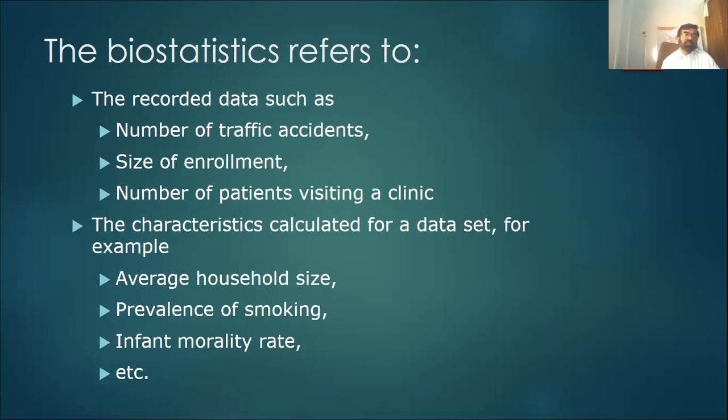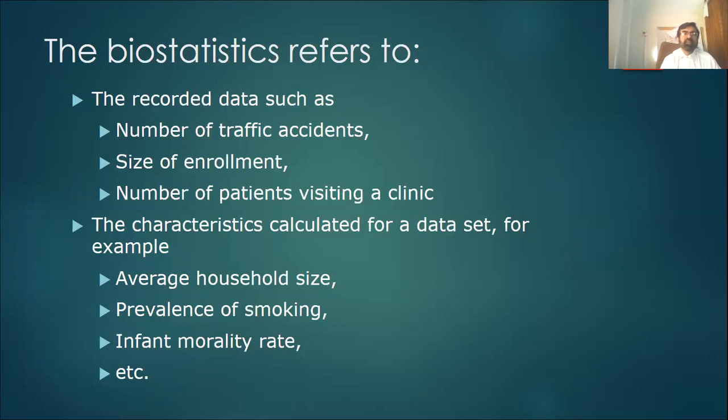Types of statistics: statistics as a subject may be divided into two - descriptive statistics and inferential statistics. Descriptive statistics are those statistics which describe your sample, for example mean, median, standard deviation, quartile deviation and so on, that you calculate from a sample. That describes your sample - that is called descriptive statistics.